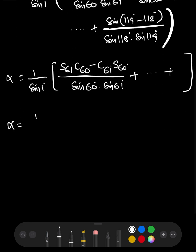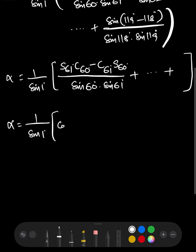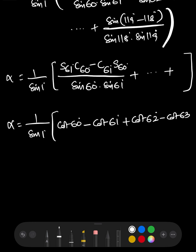After separating the numerator, α = (1/sin 1°) times the series. In the first term, sin 61° cancels, giving cos 60°/sin 60° = cot 60°, minus the second part where sin 60° cancels to give cot 61°. So we get cot 60° − cot 61° + cot 62° − cot 63°...